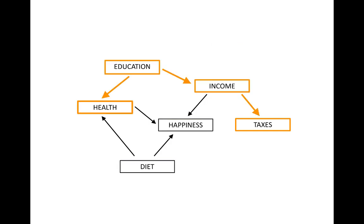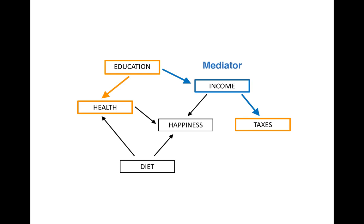On the undirected path from health to education to income to taxes, education is a common cause and income is a mediator — that is, a variable that is both an effect and a cause on the path. Common causes like education are non-colliders, and mediators like income are non-colliders as well.